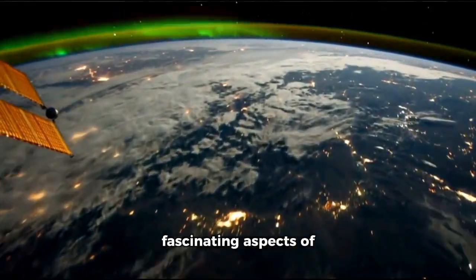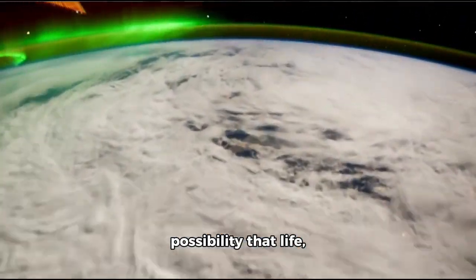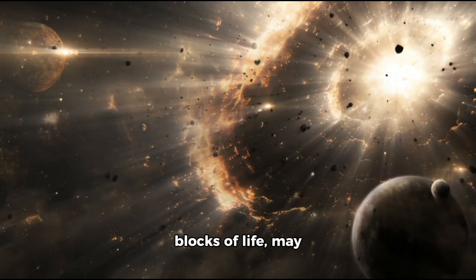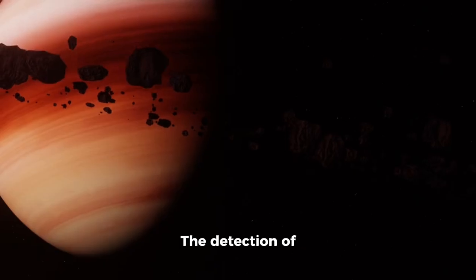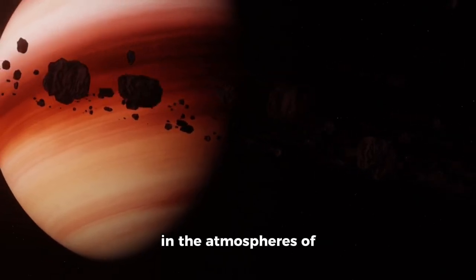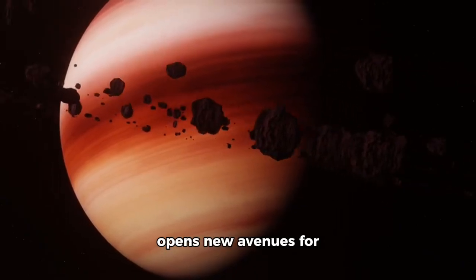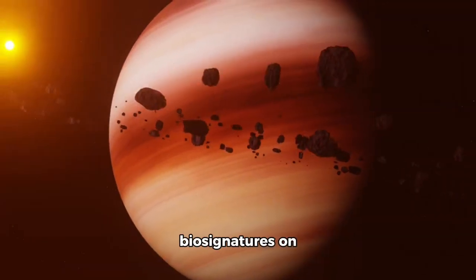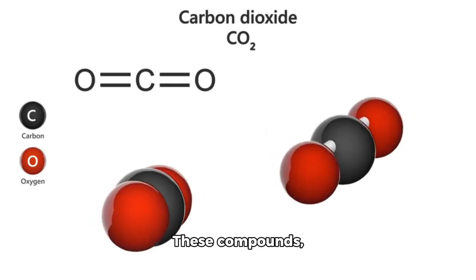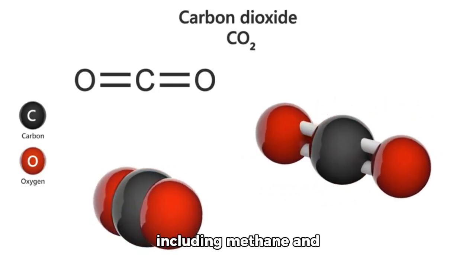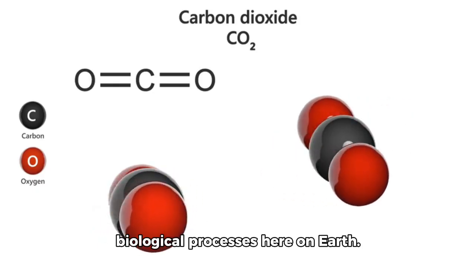One of the most fascinating aspects of these findings is the possibility that life, or at least the building blocks of life, may exist in areas we once considered hostile. The detection of carbon-based compounds in the atmospheres of exoplanets like K218b opens new avenues for studying potential biosignatures on planets that may resemble Earth in some ways. These compounds, including methane and carbon dioxide, are often linked to biological processes here on Earth.